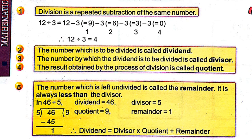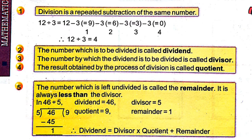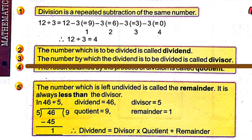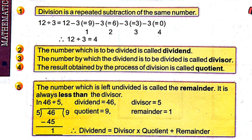Fact number 3: the number by which the dividend is to be divided is called the divisor. In the example, the dividend is divided by 3, so the divisor is 3.